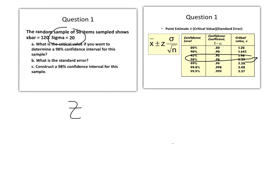Here in the table on the right we see that the critical value Z is going to be 2.33.